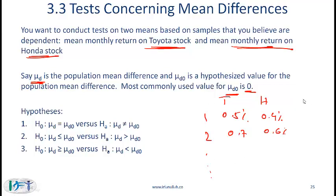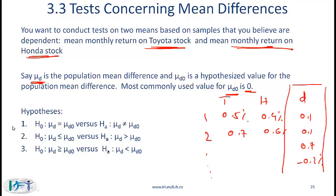D represents the difference between the two returns. For example, one month ago Toyota returned 0.5% and Honda 0.4%, giving a difference of 0.1%; two months ago it was 0.7% and 0.6%, and so on over 20 months. The first hypothesis might be that the difference is statistically different from 0. The alternate hypothesis would be that mu_d is not equal to 0, versus the null that the mean of these differences is equal to 0.